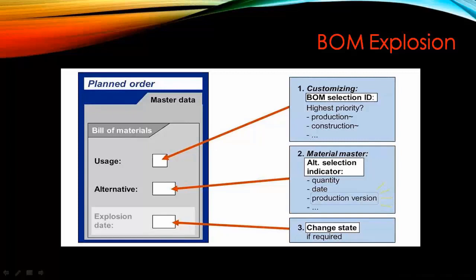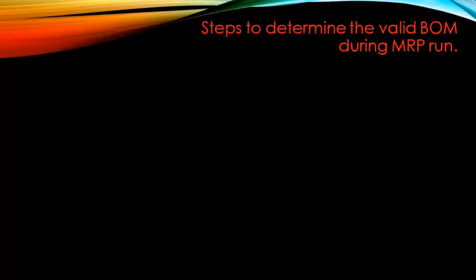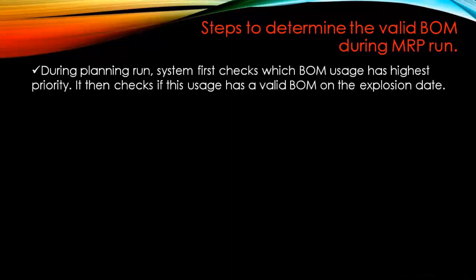We'll discuss each option one by one, including which alternative will be picked up if you have more than one BOM for the same product, and options to pick up by date, by production version, and so on. The steps to determine the valid BOM during MRP run are: first, during the planning run the system checks which BOM usage has the highest priority — this is customized in SPRO. Then it checks if that usage has a valid BOM on the explosion date.